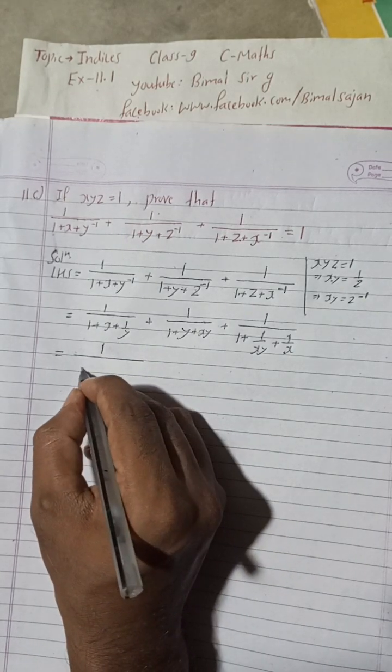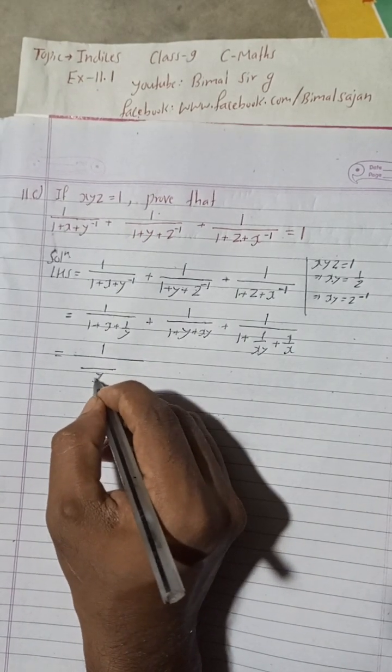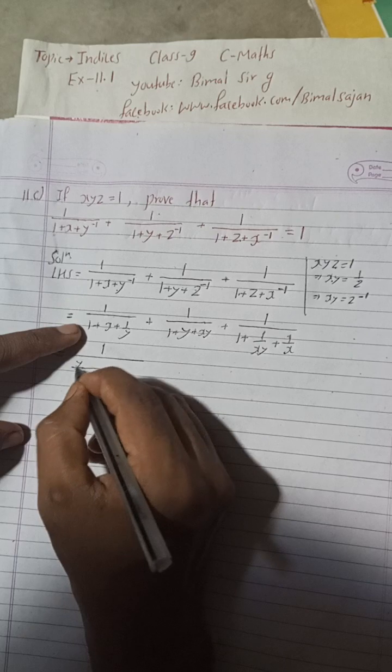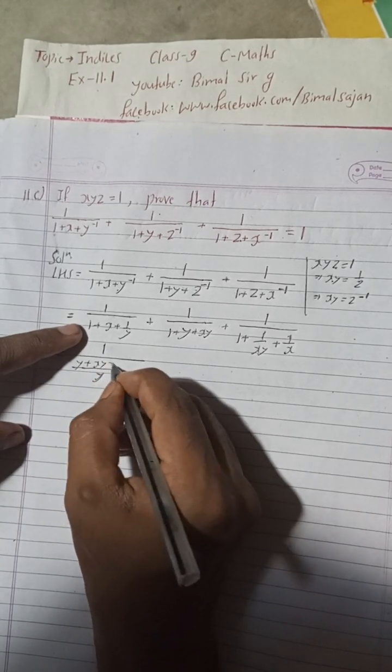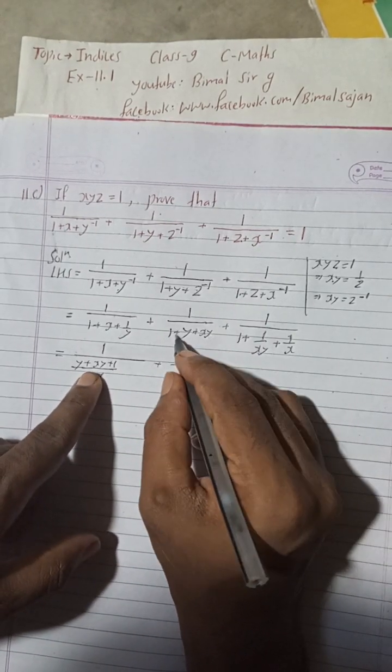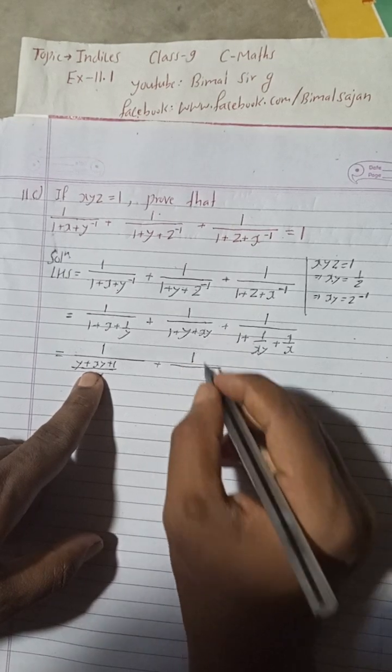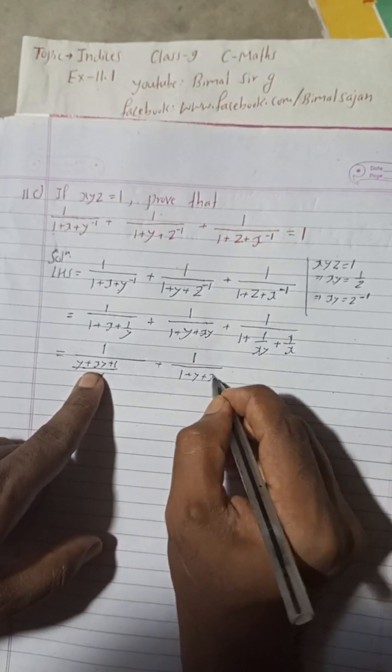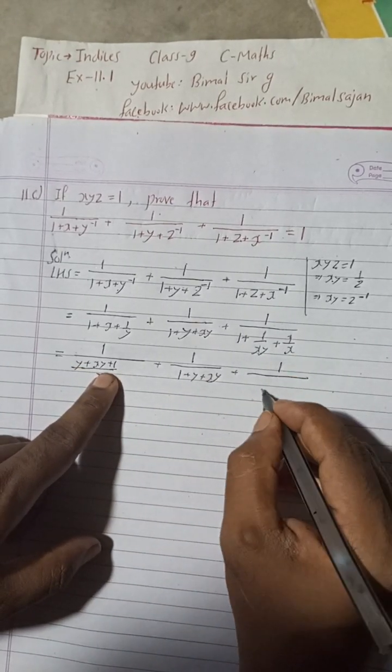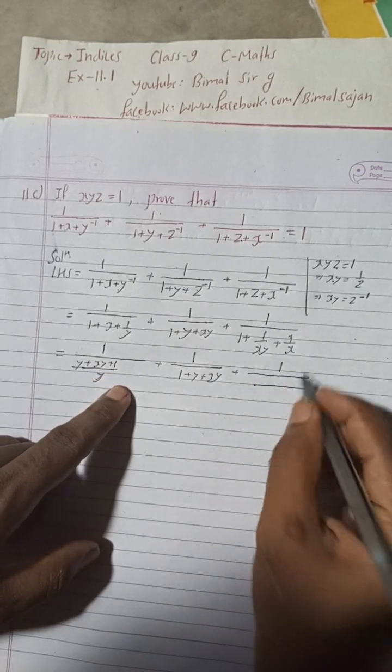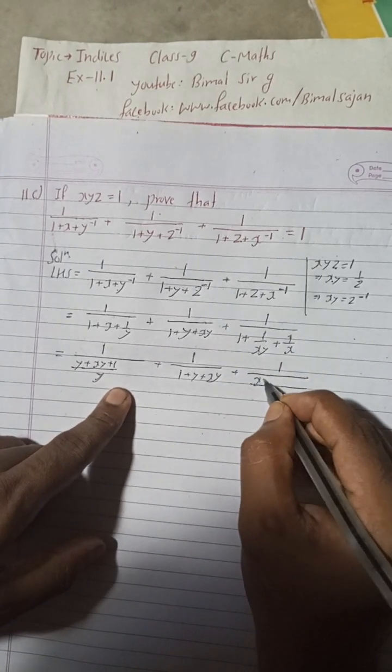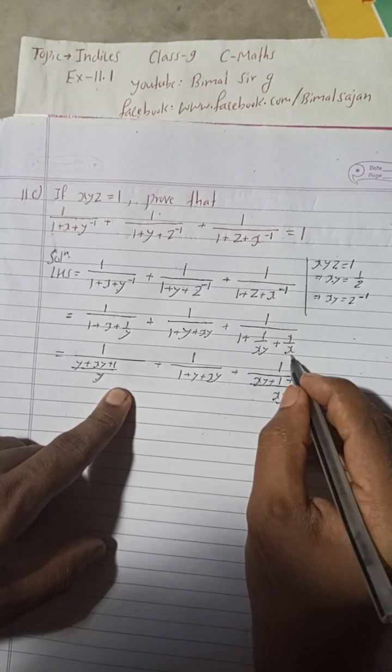Now this is 1/(1+x+1/y) = y/(y+xy+1). This is 1/(1+y+xy). Now this is 1 here, and the LCM will be xy. We need to multiply here with xy, and here plus 1, and plus there is already x, so we have to multiply with y.